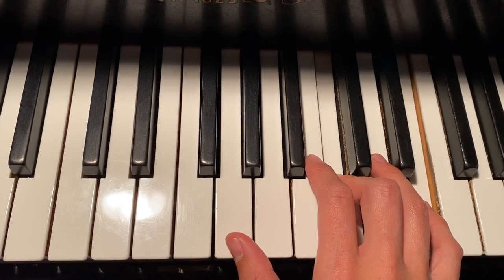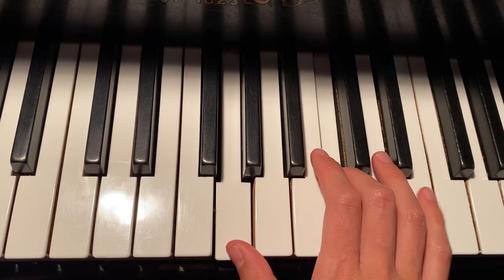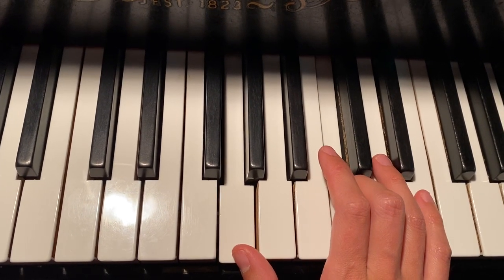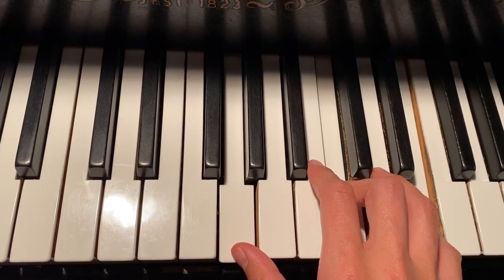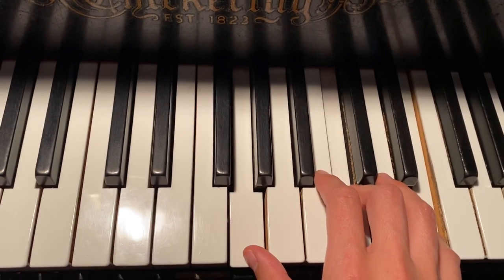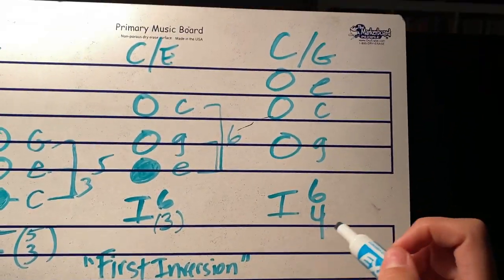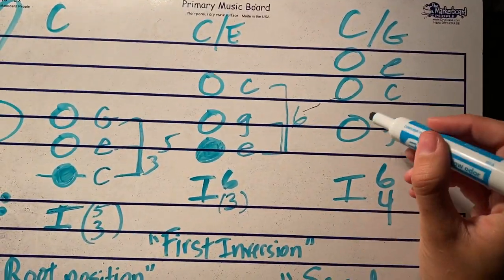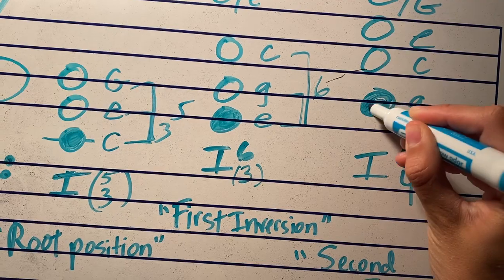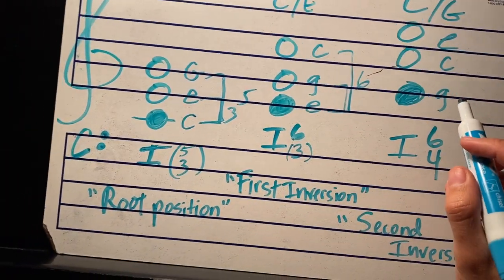So the distance between the bottom note to the middle voice is a fourth, and the distance from the bottom note to the top is a sixth. So we sometimes call it a six-four chord. So it's a one-six-four chord in this case, with G, which is the fifth note of the scale on the bottom.